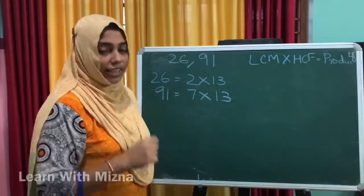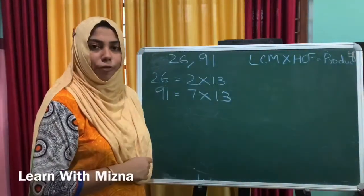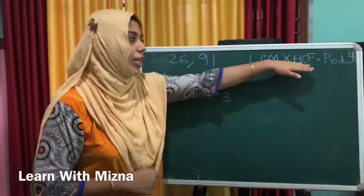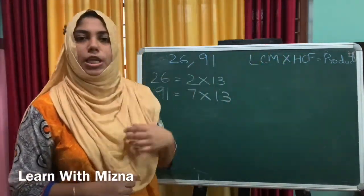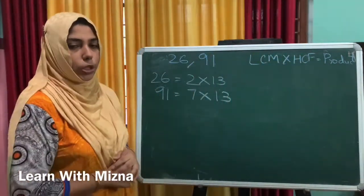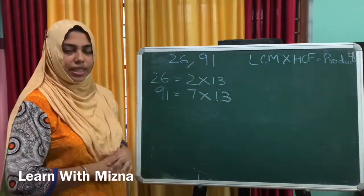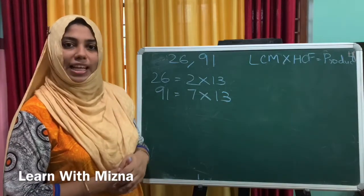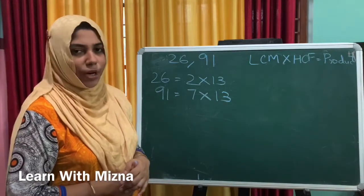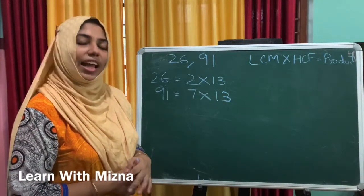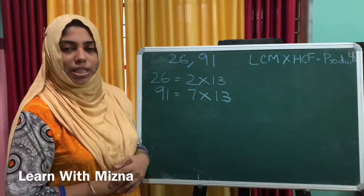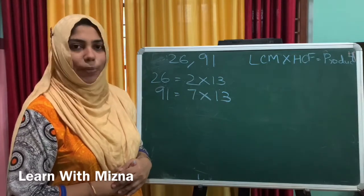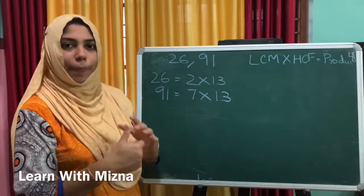Here is an important formula: LCM into HCF is equal to the product of the given numbers. We call it LCM into HCF, and that will be equal to the product of the given numbers.